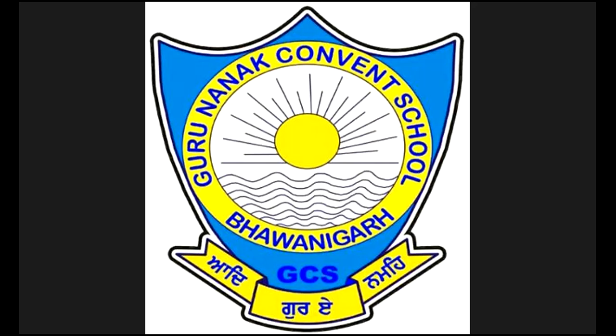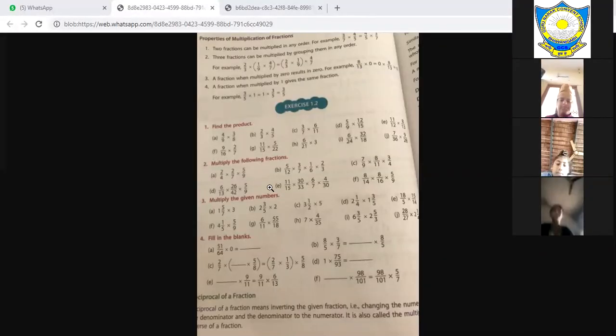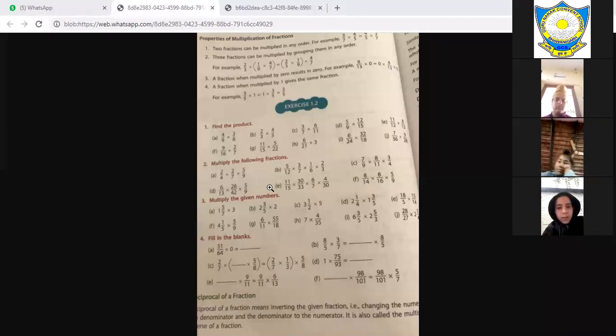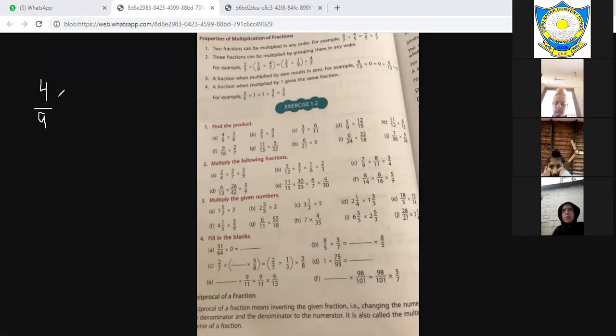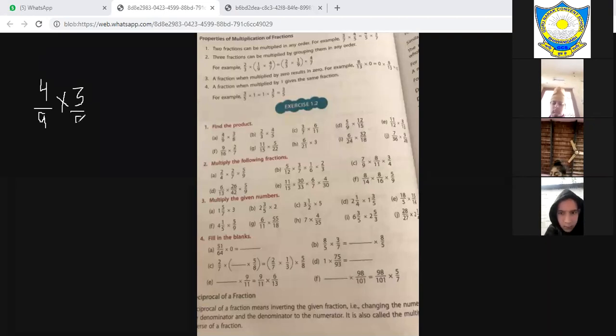What is the next exercise? Look at exercise 1.2. In 1.2, the first question is find the product. The same thing that we have done in 1.1, we have done in 1.2. Now let's see what we have done here. Look at the black screen. Look at the four upon nine, then multiply three upon eight.